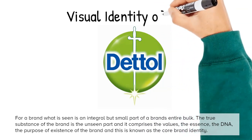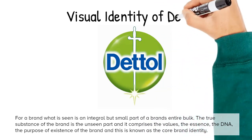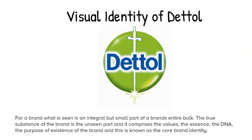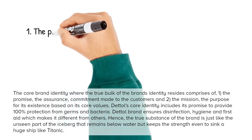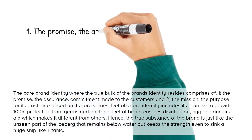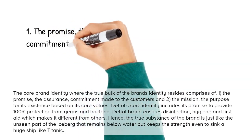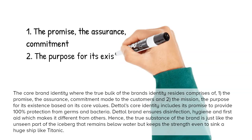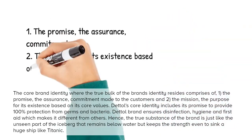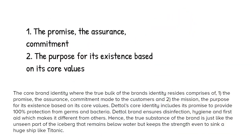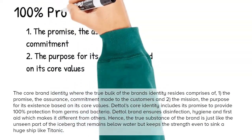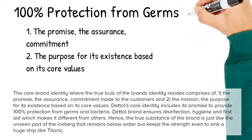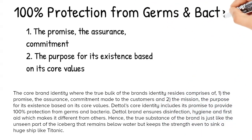The true substance of the brand is the unseen part, and it comprises the values, the essence, the DNA, the purpose of existence of the brand — this is known as the core brand identity. The core brand identity, where the true bulk of the brand's identity resides, comprises: one, the promise — the assurance and commitment made to the customers; and two, the mission — the purpose for its existence based on its core values. Dettol's core identity includes its promise to provide 100 percent protection from germs and bacteria.